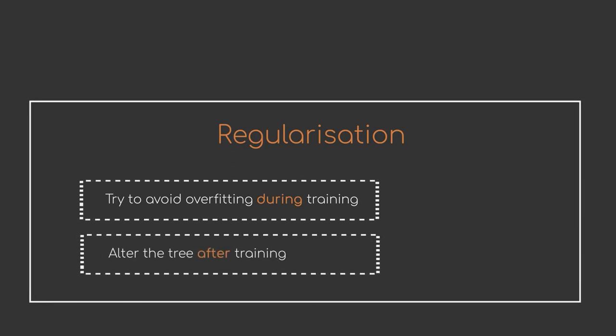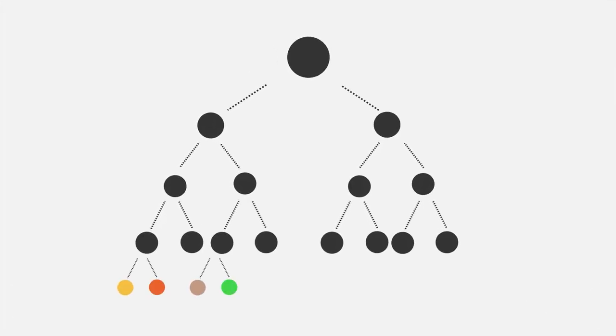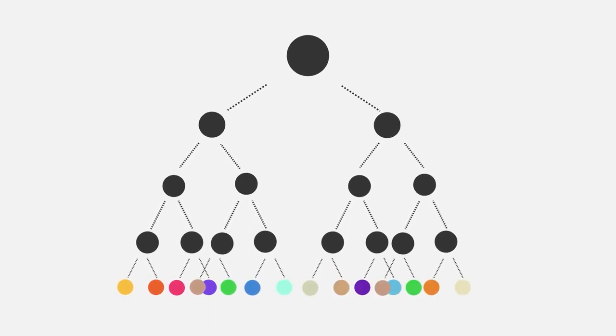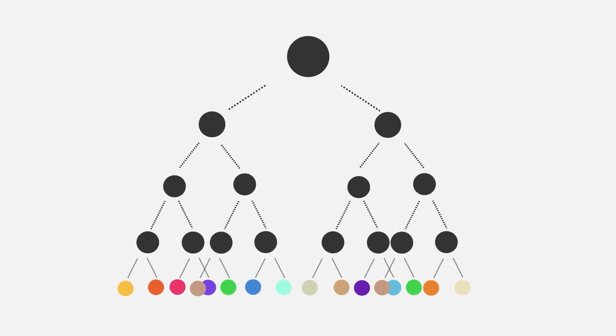Let's first look at option 1. As we have discussed, overfitting in a decision tree stems from the algorithm creating more and more splits, until we reach a perfect classification. A very simple and intuitive way to limit this behavior is to just limit the number of splits our algorithm creates.